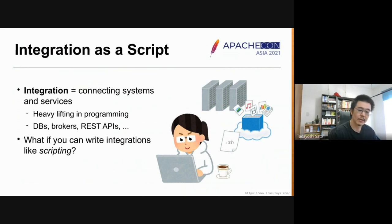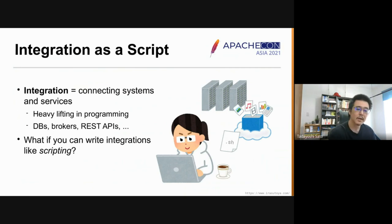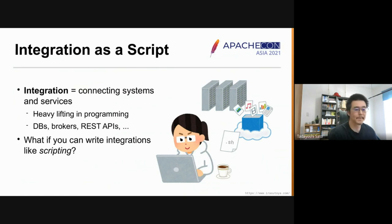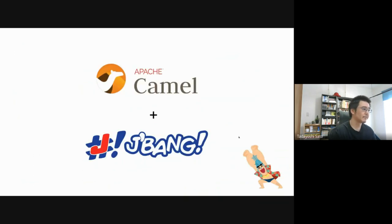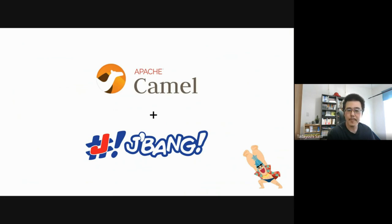But what if you can write integrations like you write a bash script? The idea of integration as a script, or integration scripting, is to try to make integration as commonplace as possible. To make it happen, the combination of Apache Camel and JBang is an ideal match. Let's introduce them one by one.